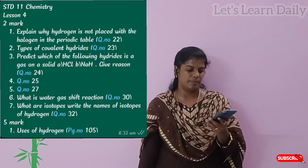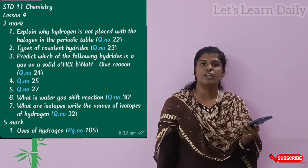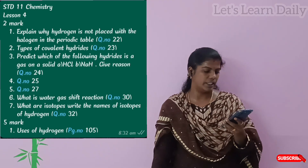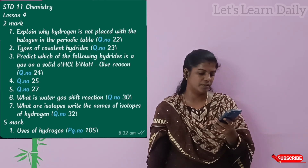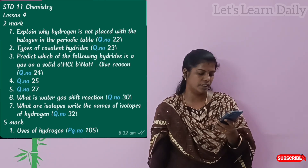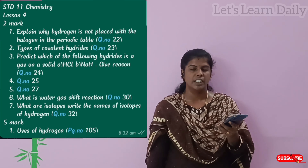So, 5 marks are the same. You can say 5 marks. The 2-mark questions are the same — question numbers 22, 23, 24, 25, 27, 30, and 32. So, what are the questions?